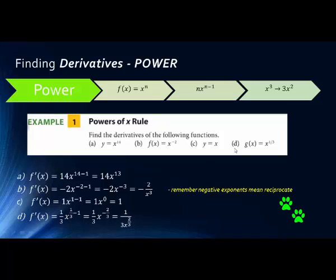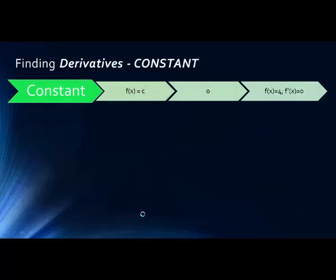We can also use the power rule with fraction exponents. Here we have x to the 1/3rd — the 1/3rd comes down in front as the multiplier, and we reduce the exponent by 1, getting 1/3 times x to the negative 2/3rds. Again, a negative exponent simply means we move it to the other side of the fraction.